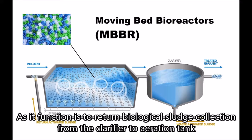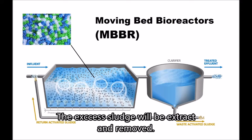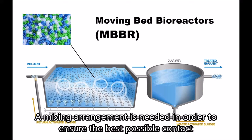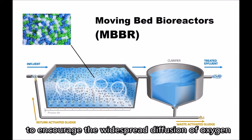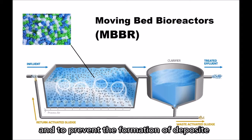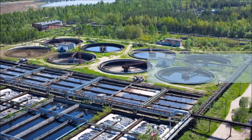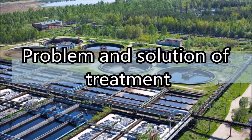The process also involves recirculation arrangements, whose function is to return biological sludge collected from the clarifier back to the aeration tank. The excess sludge will be extracted and removed. A mixing arrangement is needed to ensure the best possible contact between bacterial cells and their nutrients, to encourage widespread diffusion of oxygen, and to prevent the formation of deposits.